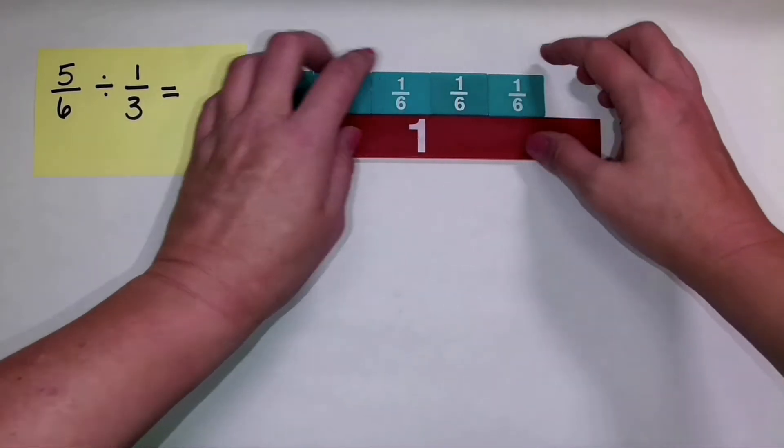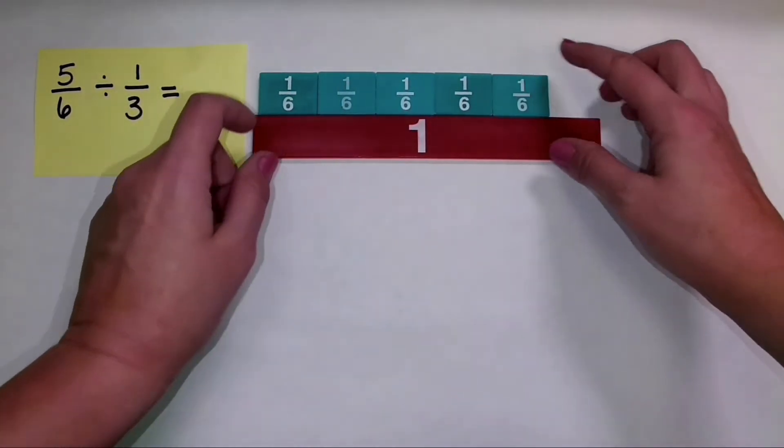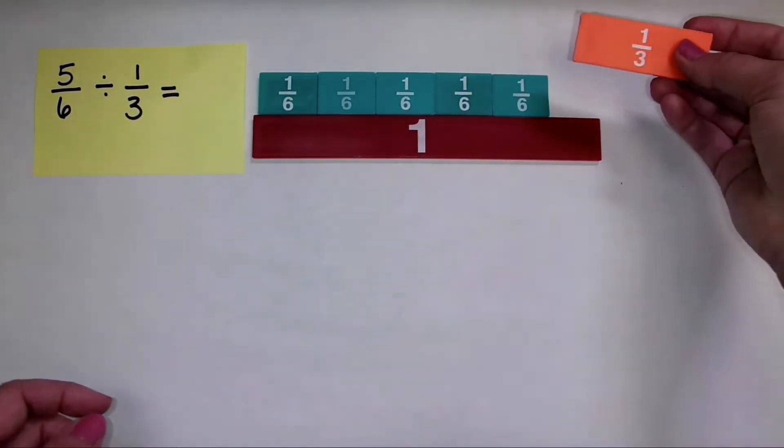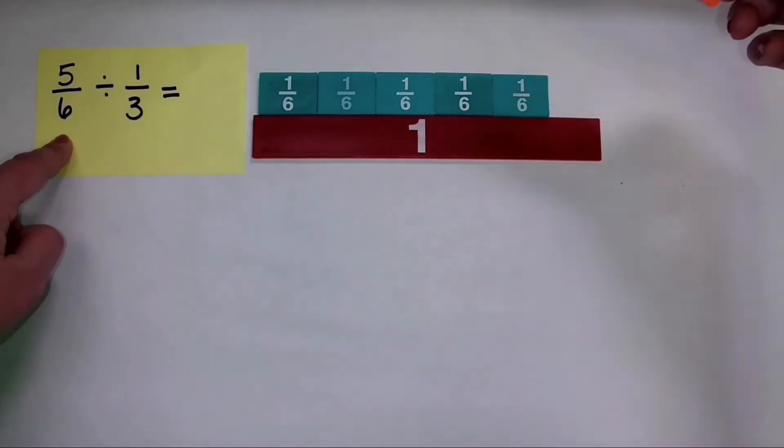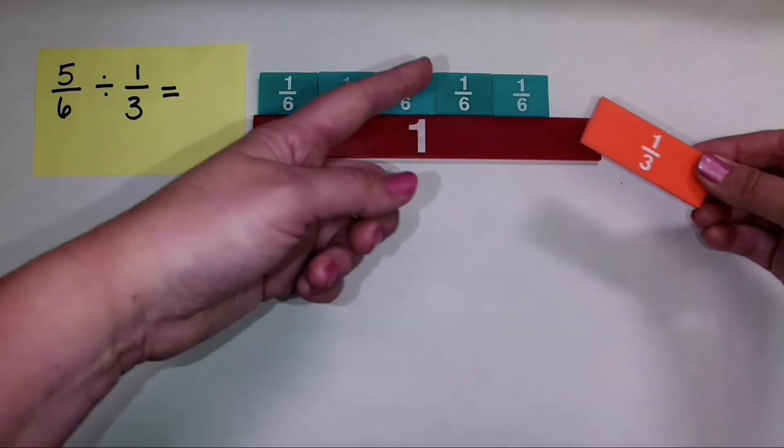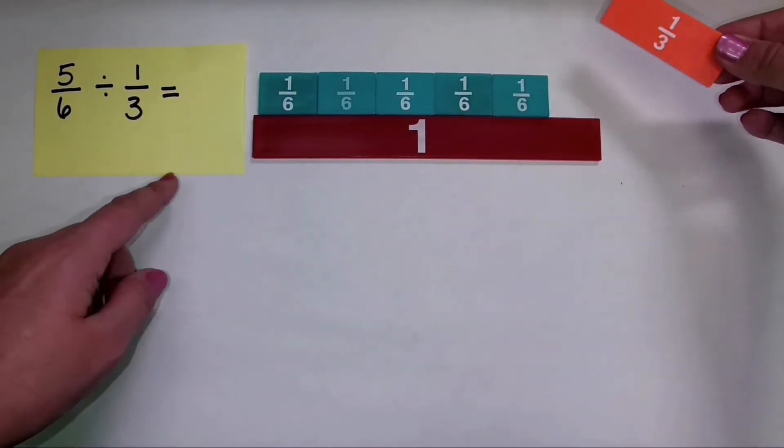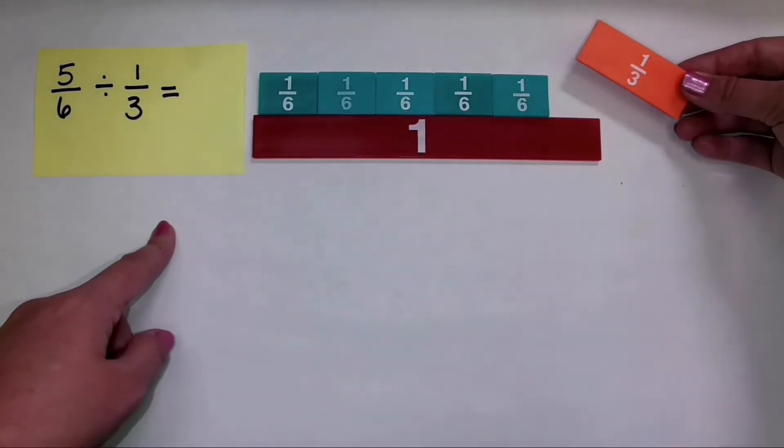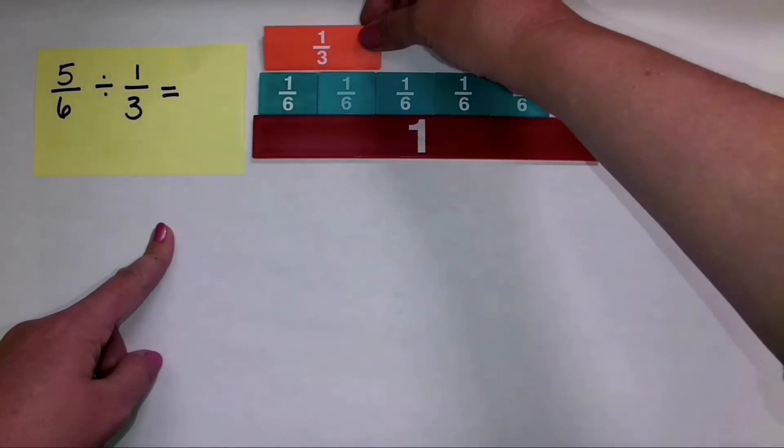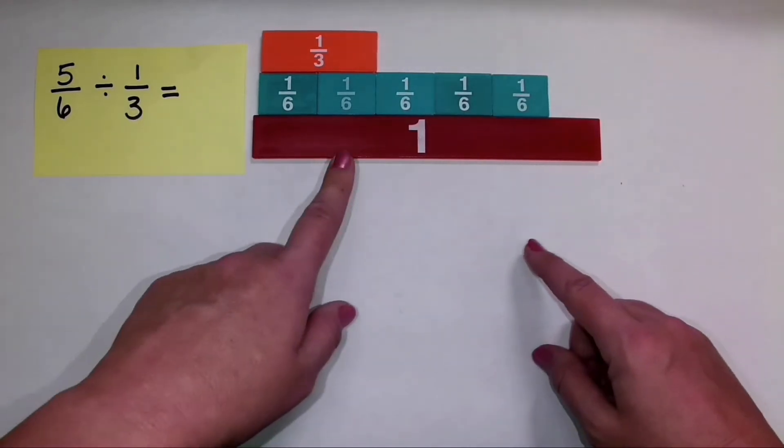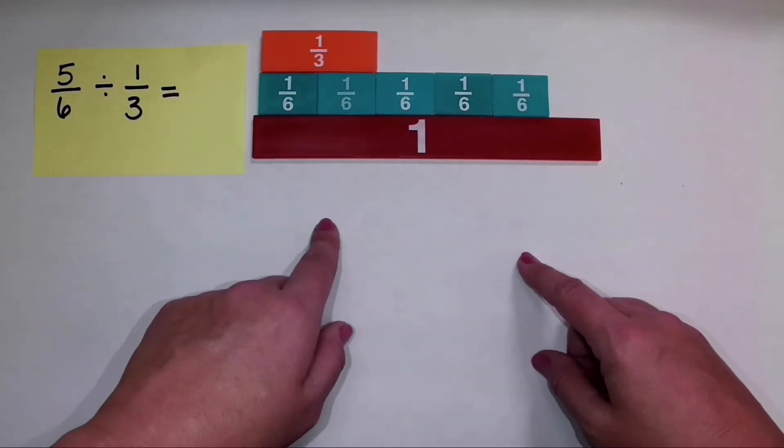Now remember I asked how many groups of one-third can I make if I have five-sixths. So I'm going to get out my one-third piece. If I had two-thirds I would just kind of group them together there, but right now I just have one-third. And I'm going to figure out how many groups I can make with this one-third piece. So let's see. I can make one full group of one-third.